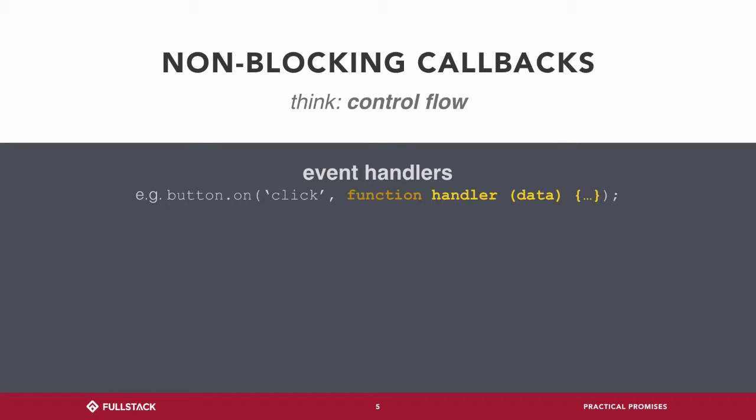When we think about non-blocking, we could sort of think about control flow. When you click on a button, when does that function get called? At some point in the future when the user ends up clicking on the button. When we end up using middleware — we do app.use or create an express route — when do those callbacks get called? It depends on when someone ends up browsing to the page.